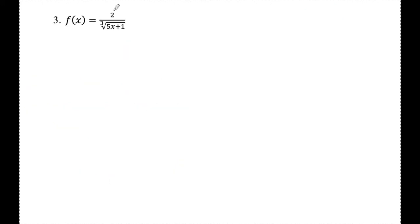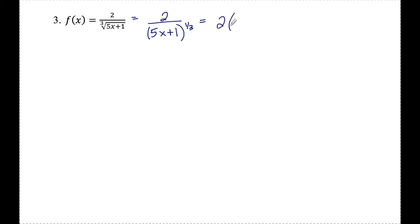Number three: f of x is 2 over the cube root of 5x plus 1. I'll first rewrite this so the denominator has a fractional exponent: 5x plus 1 to the one third in the denominator. To avoid using the quotient rule while also using the chain rule, I'll bring this binomial to the numerator by negating the exponent. So f of x becomes 2 times 5x plus 1 to the negative one third.